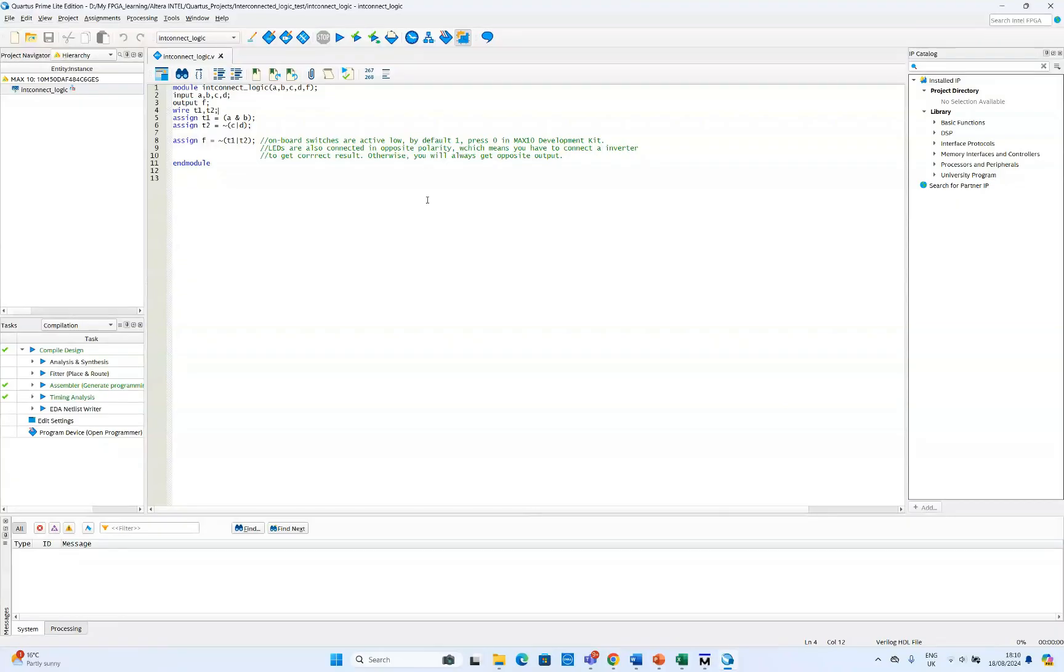So now to start with Quartus Prime, we already created the project and we have uploaded the Verilog code we were discussing. So in our previous video we discussed how you can create a project in Quartus Prime and how you can upload the code in the Max 10 development board using Quartus Prime. So we will do it here again. So here you can see the Verilog code we are talking about, and as we are discussing we added an extra NOT gate here so that we can get the correct logic from our Max 10 development board.